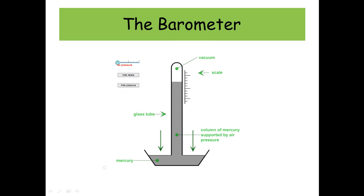The barometer. Well, a barometer is used to measure air pressure. So there's an air pressure acting down, and then that is supporting a column of mercury. And these two pressures are equal.